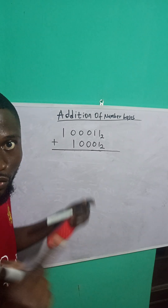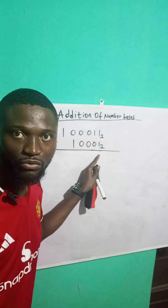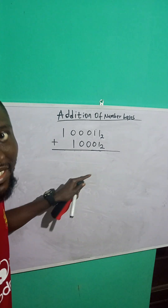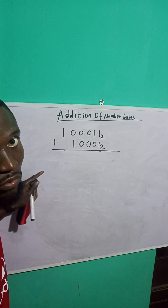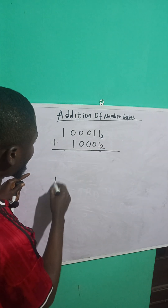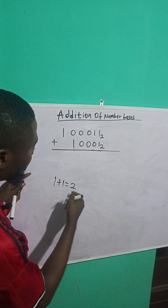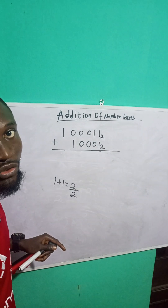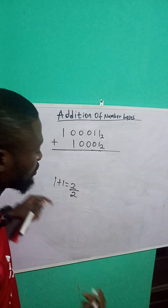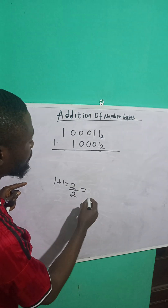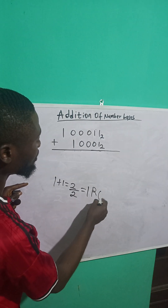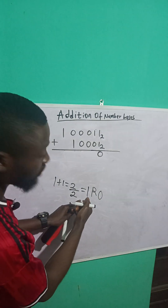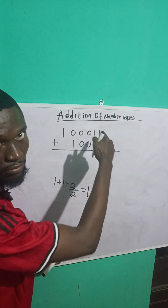Now, 1 plus 1 is 2. We cannot put 2 in base 2 because it must be a number that is less than 2. So 1 plus 1 gives you 2. You are going to divide it by 2, since you are adding these numbers in base 2. And 2 divided by 2 will give you 1 remainder 0. Now, this remainder of 0, you put it here. This 1 that is here, take it to the next number.